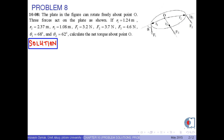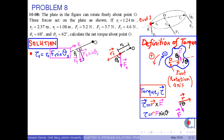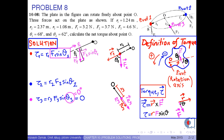In order to solve the problem, it is important to give the definition of torque as depicted in this figure. According to this configuration, the torque due to F1 acting on pivot 1 is R1 times F1 times sin(theta1). By the same way, the torque due to force F2 acting upon pivot 2 is R2 times F2 times sin(theta2). And also, the torque due to F3 equals R3 times F3 times sin(theta3).